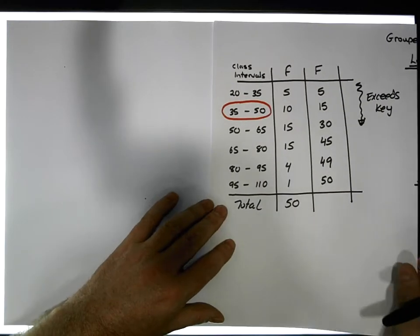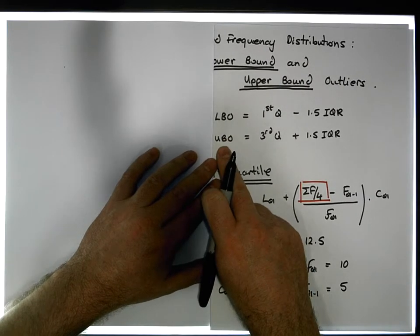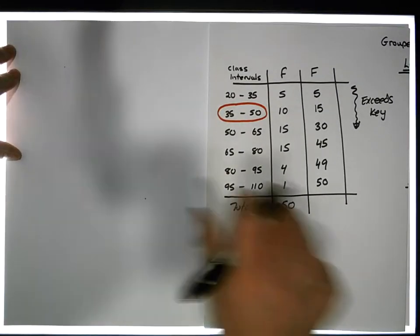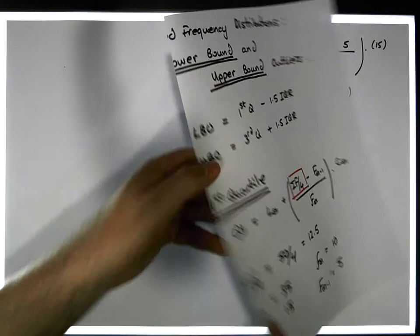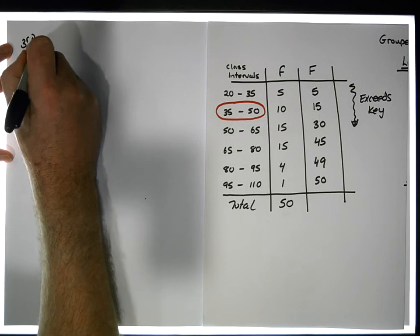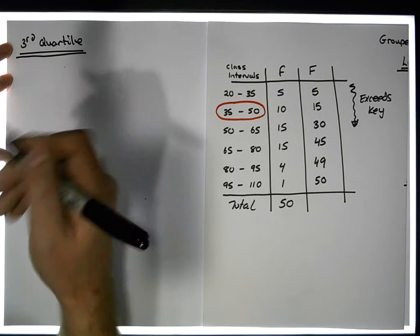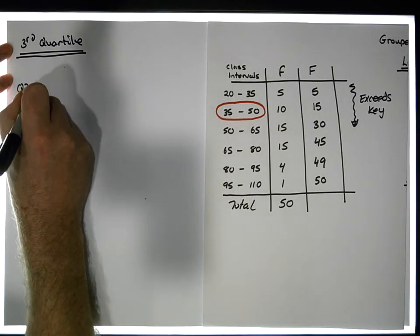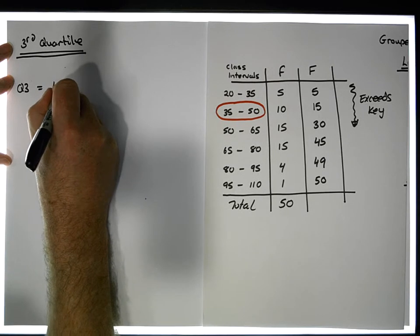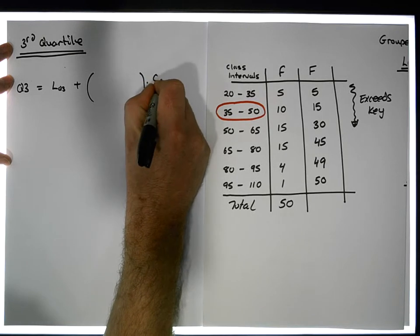So what about the third quartile? To calculate the upper bound outliers, we need the third quartile. The formula for Q3 is: Q3 equals L of Q3 (the lower bound of that class), plus some fractional amount times the class width C of Q3. How far along is the third quartile going to be? It's going to be three quarters of sigma f — that is, three sigma f over 4 — minus capital F of Q3 minus 1, divided by small f of Q3.